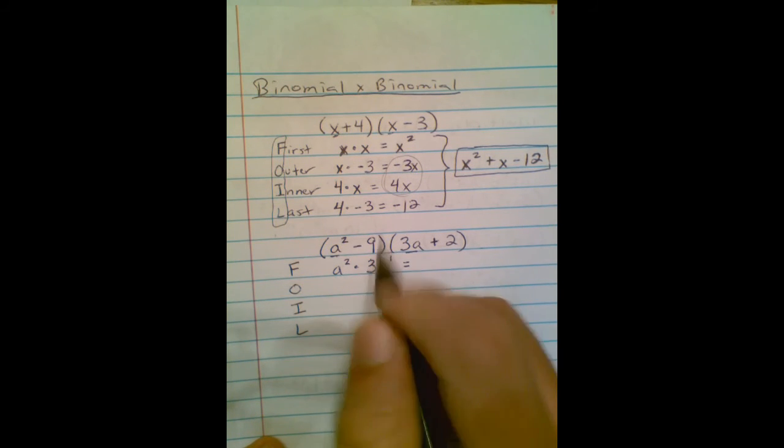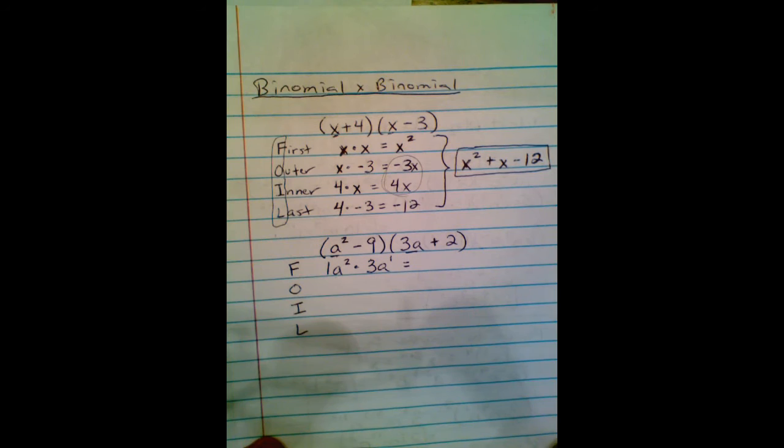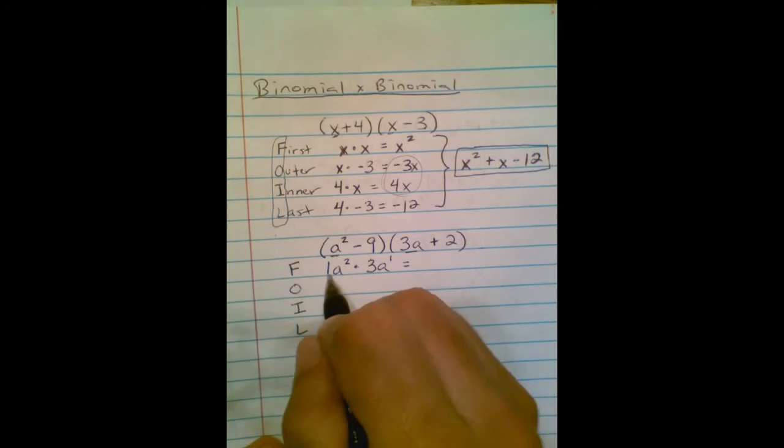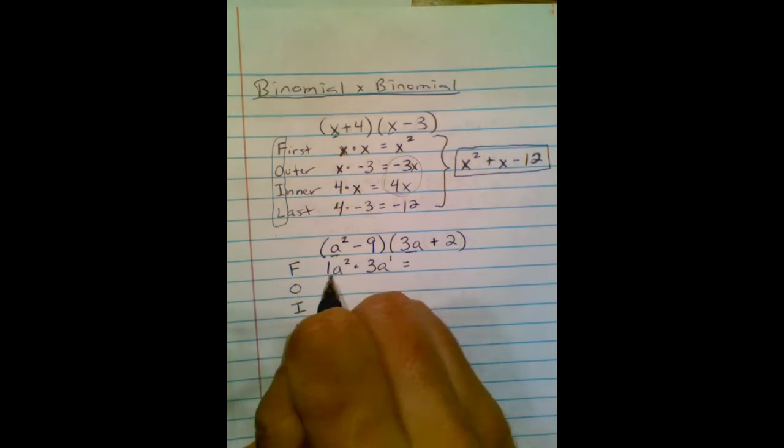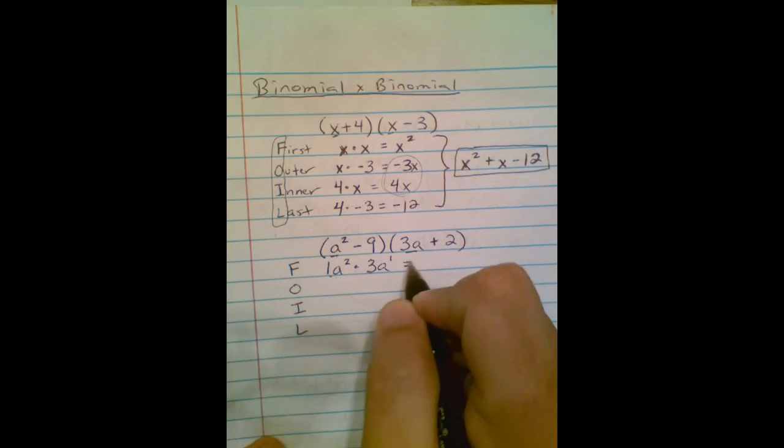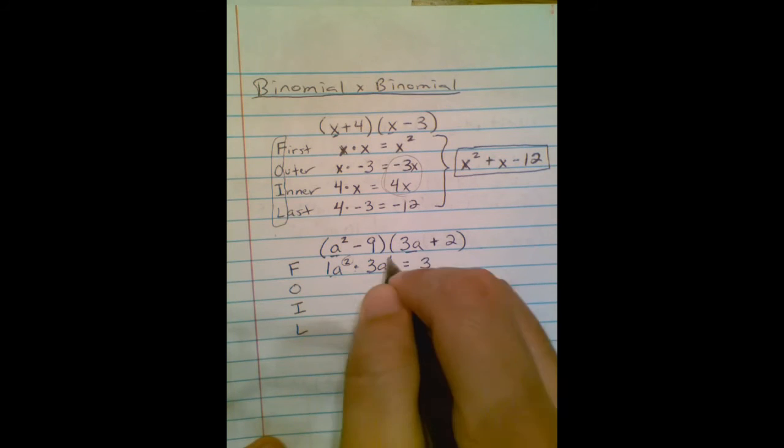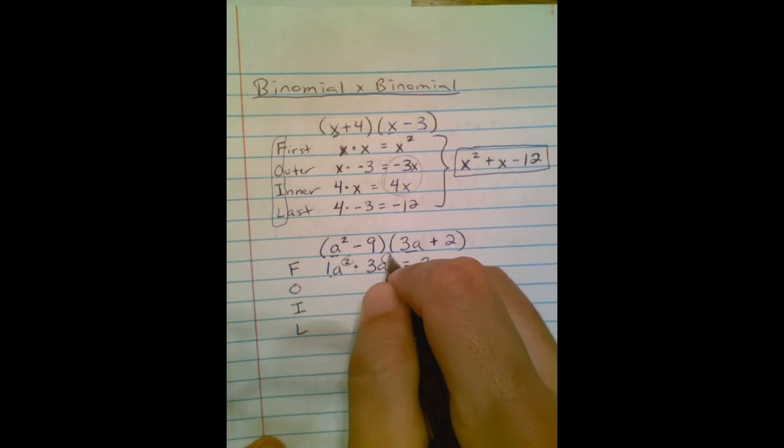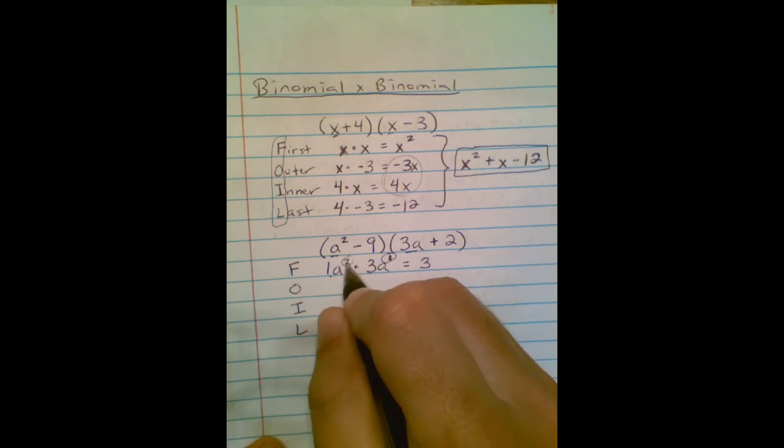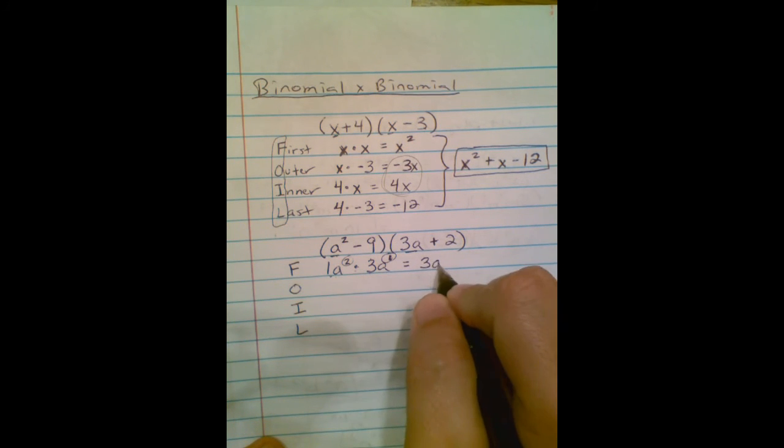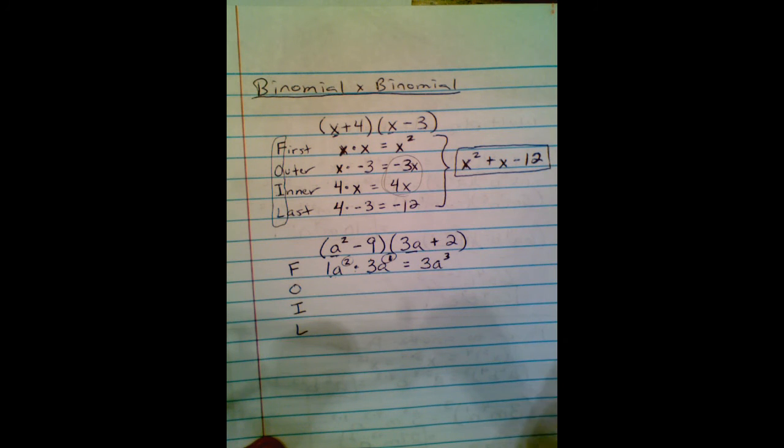First I got a coefficient to deal with. There's a 1 in front of this a². We'll do 1 times 3, which is 3. And then I add these exponents. That's my rule for like bases. a to the 2 plus 1. 2 plus 1 would give me 3. So 3a³ is the first term.